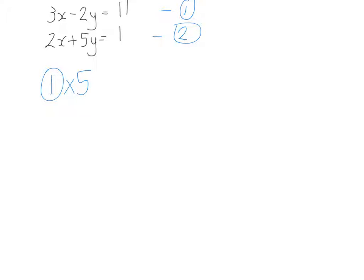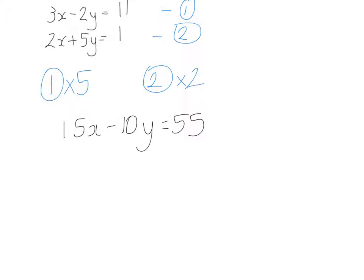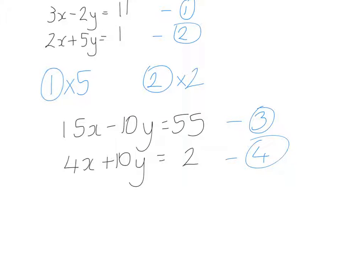I'm going to choose to eliminate the y's. If I multiply equation one by 5, I get 15x take away 10y equals 55 — calling that equation three. If I multiply equation two by 2, I get 4x plus 10y equals 2 — calling that equation four. Now I have minus 10y and plus 10y, so I can work with this.